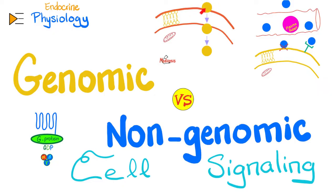If you are a lipid-soluble hormone, and the cell membrane is lipid — the lipid bilayer — then lipid can diffuse through lipid with ease. So I will enter the cell, no problem, reach the nucleus, and influence the genes of the nucleus. Hashtag genomic action.